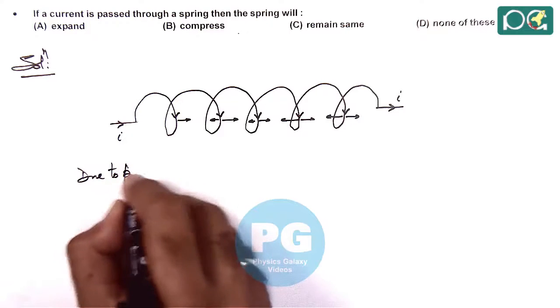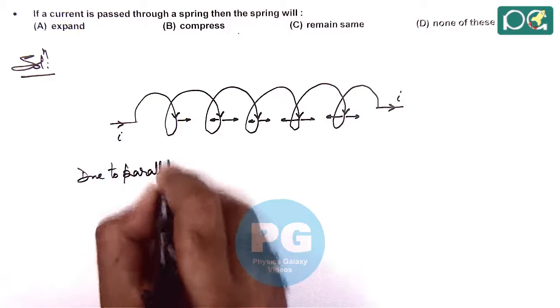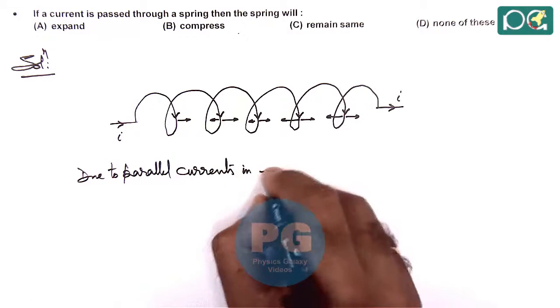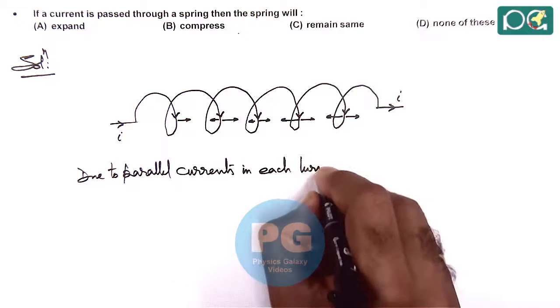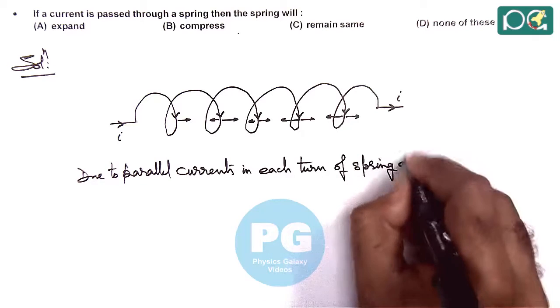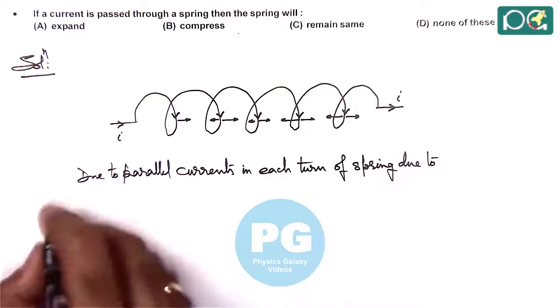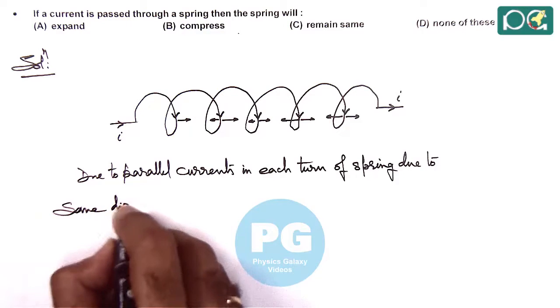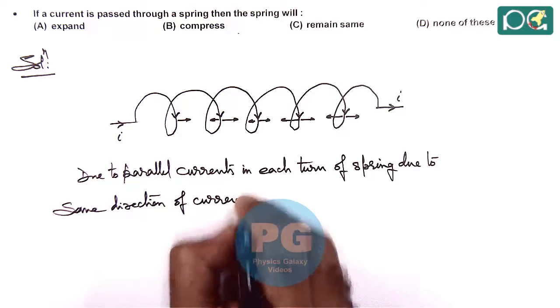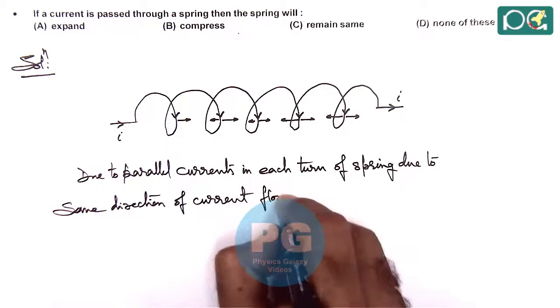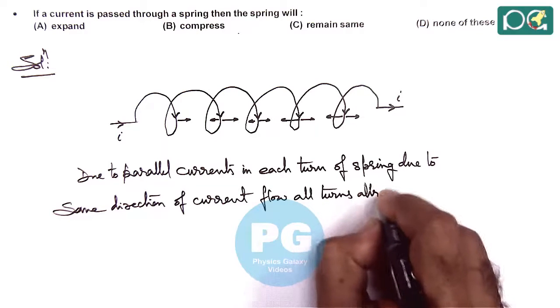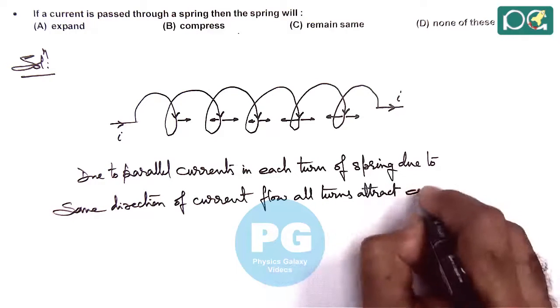Due to parallel currents in each turn of a spring, due to same direction of current flow, all turns attract each other.